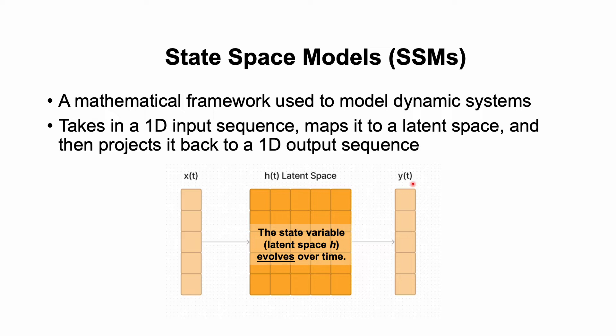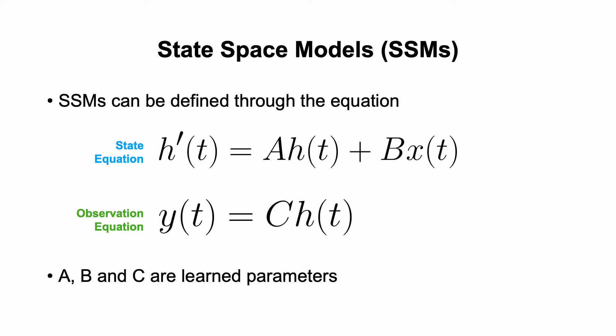SSMs are at the core of Mamba, and you can think of them as kind of like a replacement for the self-attention mechanism in the transformer. In the SSM, you have a state variable, our latent space h, and this state variable evolves over time depending on the input. SSMs can be defined through ordinary differential equations h' and y. The state equation, or h', describes how the internal state of the system evolves over time. And then the observation equation, or y of t, relates that internal state of the system to the measurements or observations that are made. A, B, and C, in this case, are learned parameters.